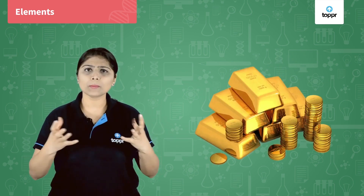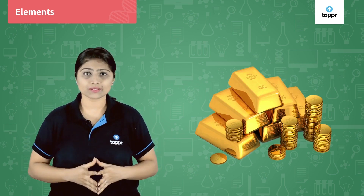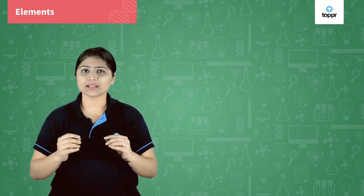Let us first understand what are elements. Elements are the basic form of matter. These elements make up the other things around you. They are just made up of one kind of particles. If you have iron, go on hammering iron, break it into smaller pieces and every small particle of iron will look just the same. That means iron is just made up of iron particles. Even gold is just made up of gold particles — it is just the same throughout. So an element is the basic form of matter which is just made up of one kind of particles.